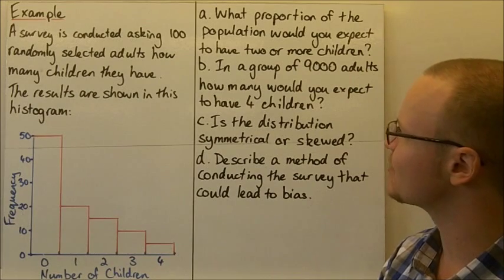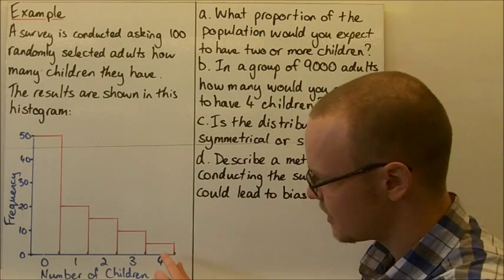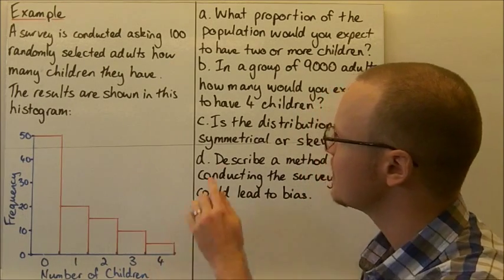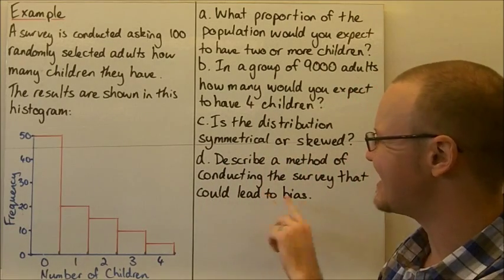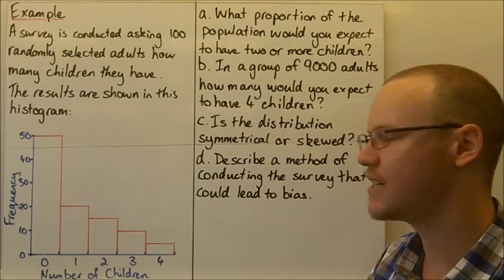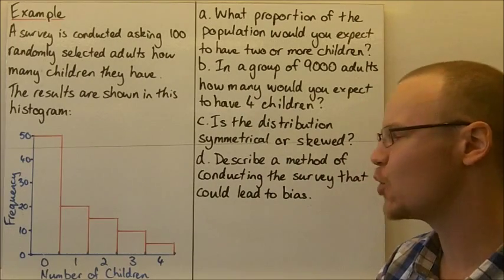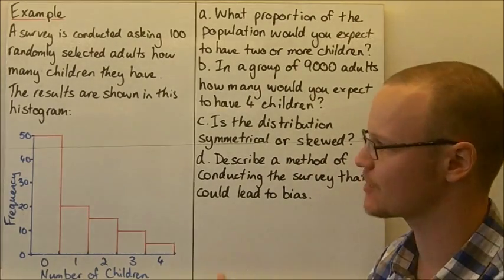B, in a group of 9000 adults, how many would you expect to have four children? So just looking at the four children there. C, is the distribution symmetrical or skewed? D, describe a method of conducting the survey that could lead to bias in the actual data.